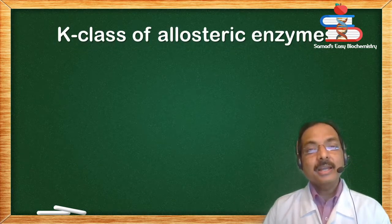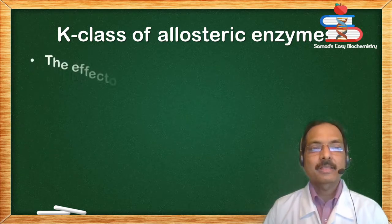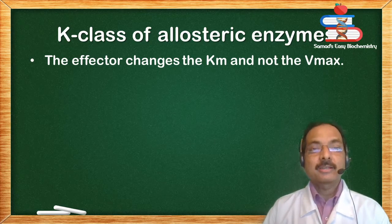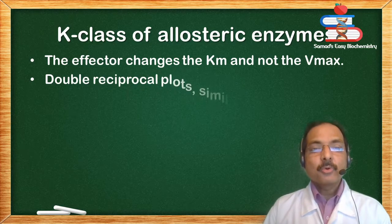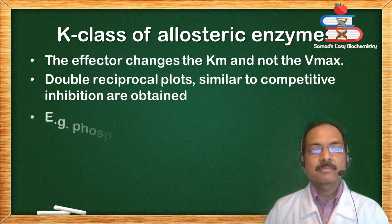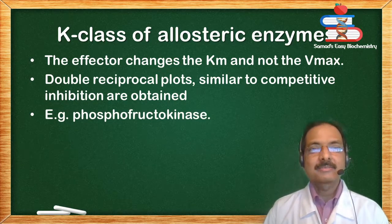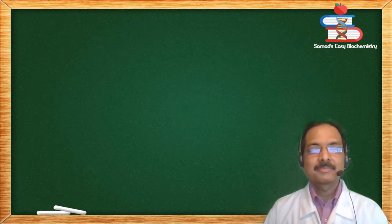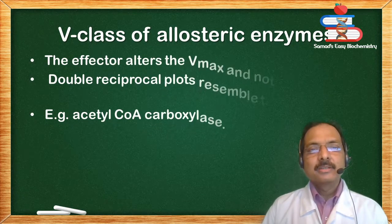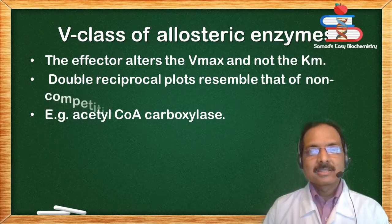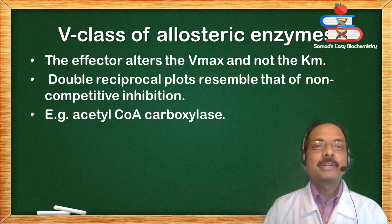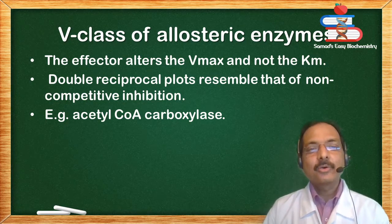K-class of allosteric enzymes: the effector changes the Km and not the Vmax; therefore called K-class. Double reciprocal plots similar to competitive inhibition are obtained. V-class of allosteric enzymes: the effector alters the Vmax and not the Km. Double reciprocal plots resemble that of non-competitive inhibition. Example: acetyl-CoA carboxylase.